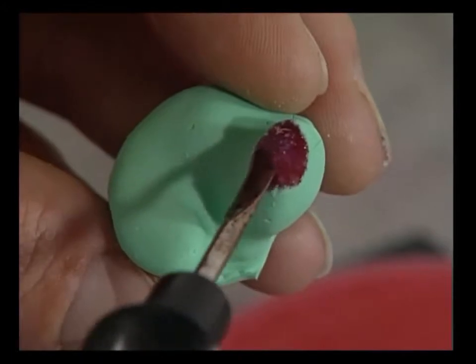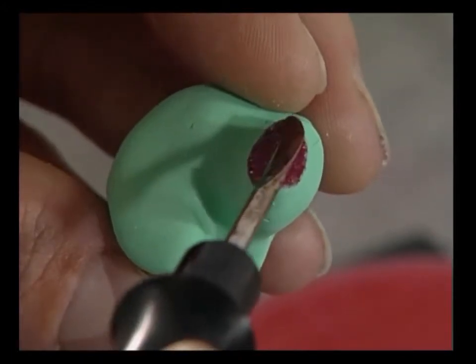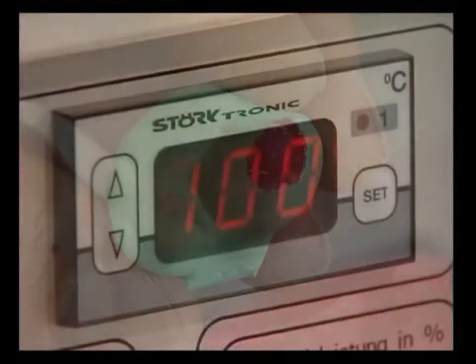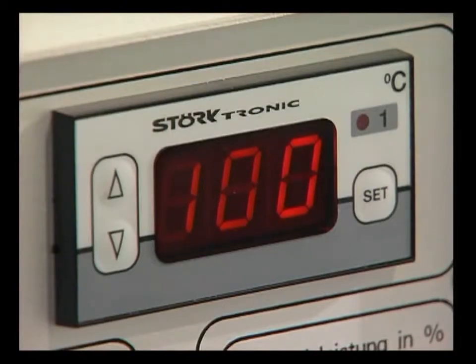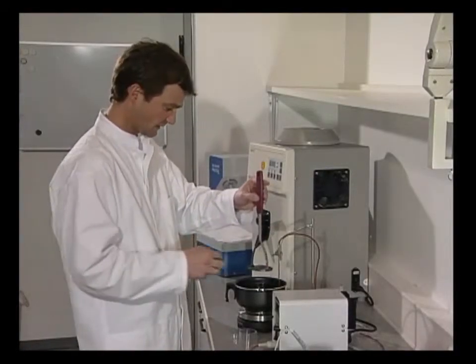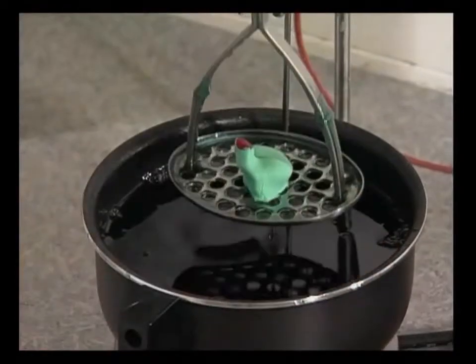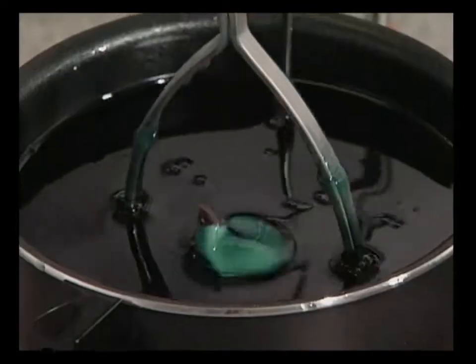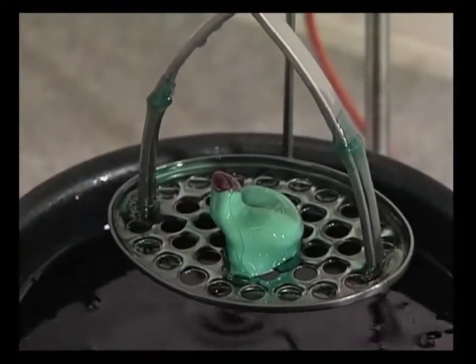The temperature in the electric wax immersion unit is maintained at a consistent 100 degrees Celsius. The impression is placed in a dipping sieve and dipped vertically into the liquid wax. The impression must be completely covered by the dipping wax.